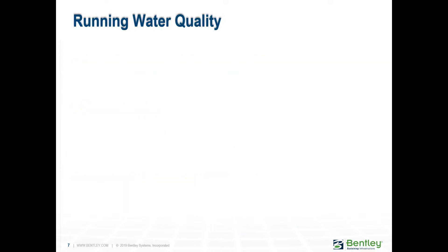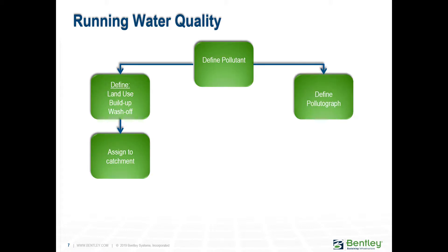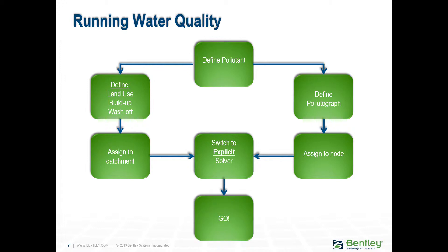Here is an overview of the steps to perform a water quality analysis for point and non-point sources of pollutant. First you define the pollutant — it's like a library, like we saw in the previous workshop where you define the storm data. For a point source, you define the pollutograph and then assign it to a node. For a non-point source, you define the land use, buildup, and washoff, and assign to a catchment. Finally, you need to use a scenario with an explicit solver in the calculation options, and then you are good to run your scenario.